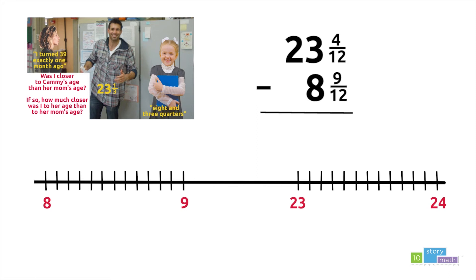Using the number line I created, I began at eight and nine twelfths and worked my way up to 23 and four twelfths. It takes three twelfths to get to nine. From nine to 23, I needed to count up 14. And then I needed to count up four twelfths more to reach 23 and four twelfths. Bring it all together and the difference between 23 and four twelfths and eight and nine twelfths is 14 and seven twelfths. That means the difference between my age and Cammie's age was 14 and seven twelfths years.